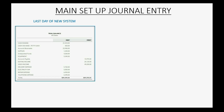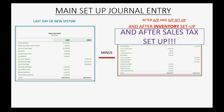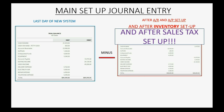Once you do that, you're ready for the main setup journal entry. As always, the main setup journal entry is equal to the balances in each account as of the last day in the old system, minus the balances as a result of accounts receivable and accounts payable setup, after inventory setup, and now also after sales tax setup. Those would be the amounts for your main setup journal entry.